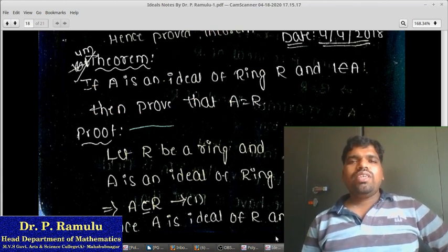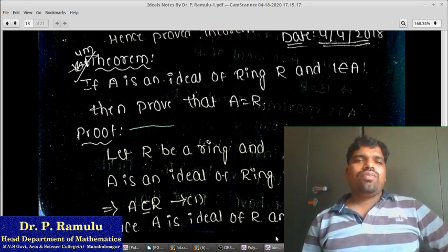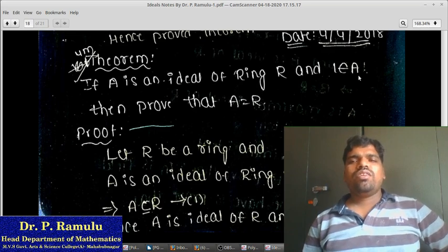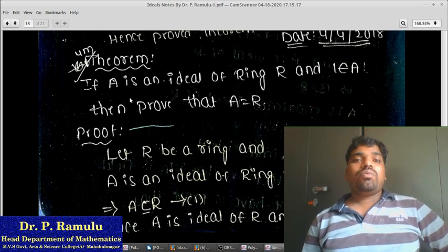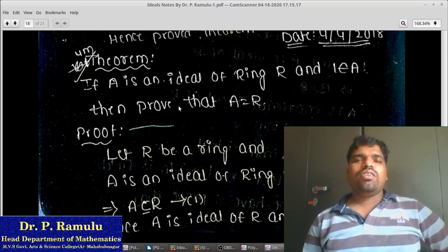Theorem: If A is an ideal of ring R and 1 belongs to A, then prove that A equals R. Suppose A is an ideal of ring R and 1 belongs to A, then A equals R.